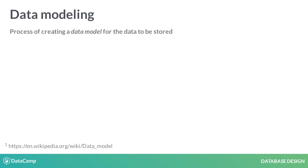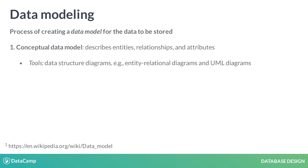The first step to database design is data modeling. This is the abstract design phase, where we define a data model for the data to be stored. There are three levels to a data model. A conceptual data model describes what the database contains, such as its entities, relationships, and attributes.